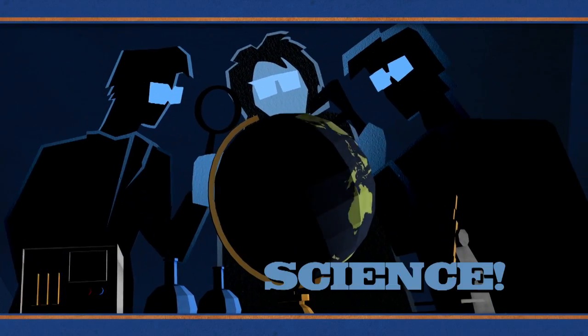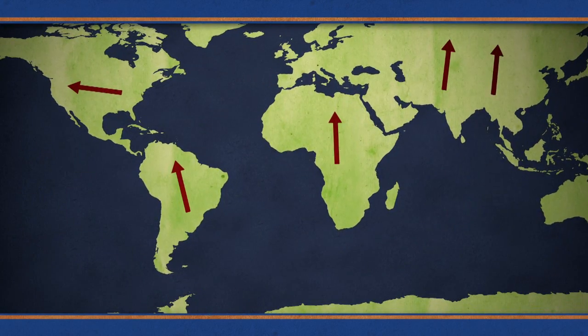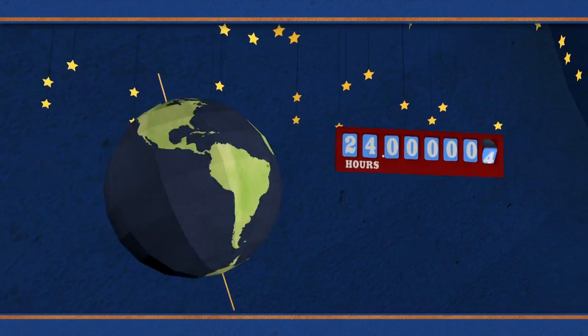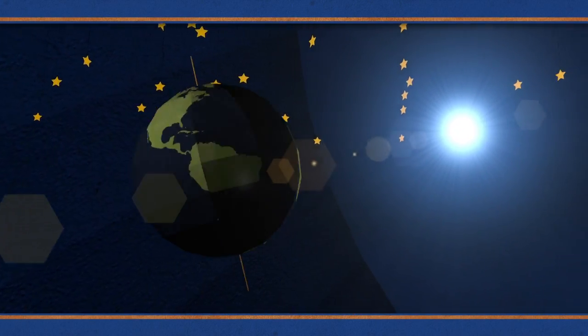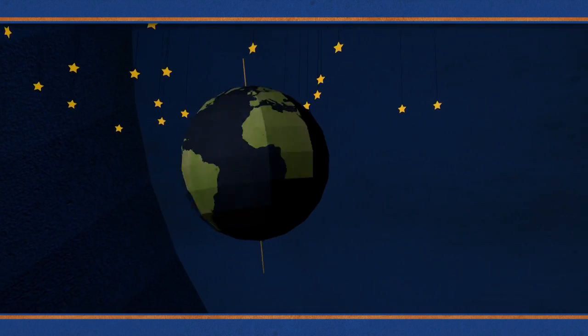But scientists who like to find out exactly what's going on know the ground actually moves around quite a bit. Days are never quite 24 hours, and the Earth actually wobbles on its axis in a very particular way as it revolves around the sun.